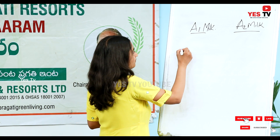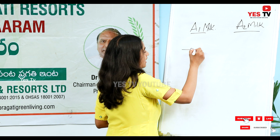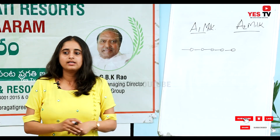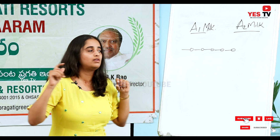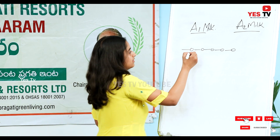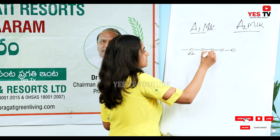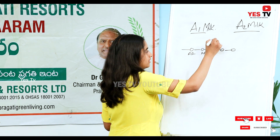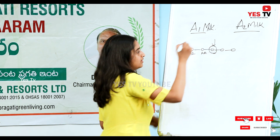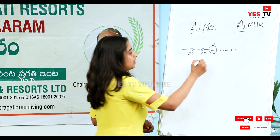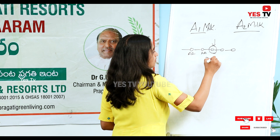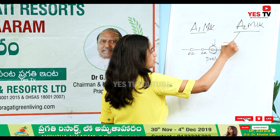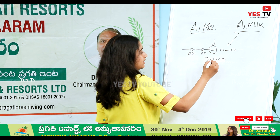So what is the difference? Milk has protein. What is a protein? It is a chain of amino acids. In that amino acid chain, at one particular point there is a change. In A2 milk, at that position, proline is present.